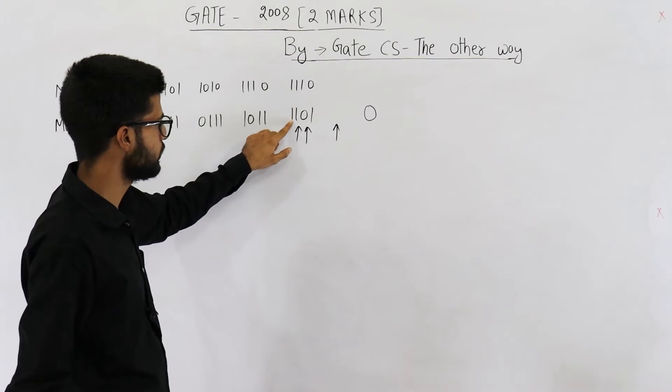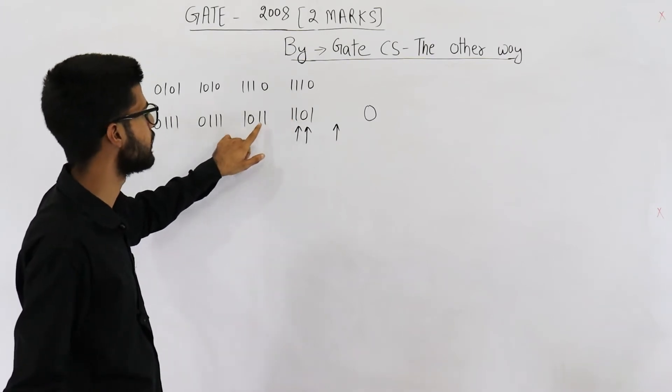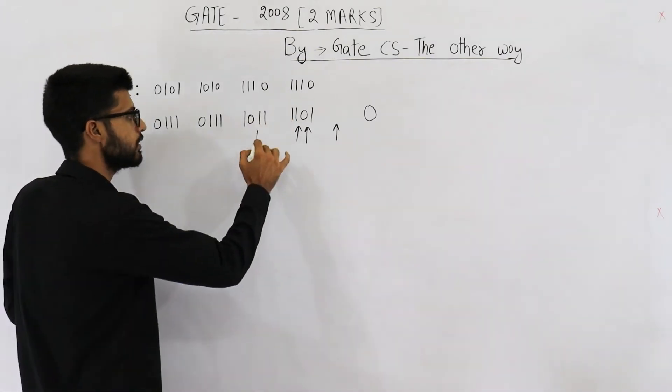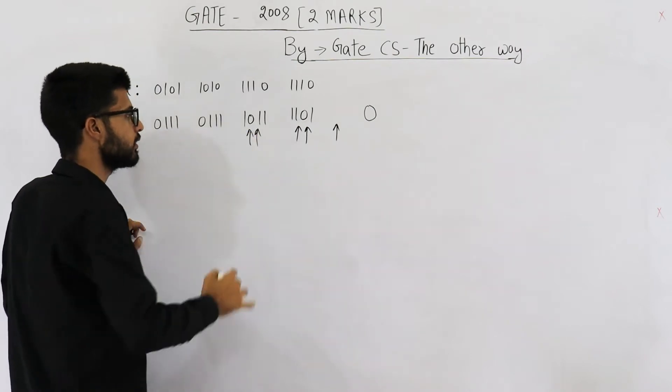Now from one to one, no change. One to one, no change. One to one, no change. Now one to zero, there is a change. Zero to one, again there is a change.